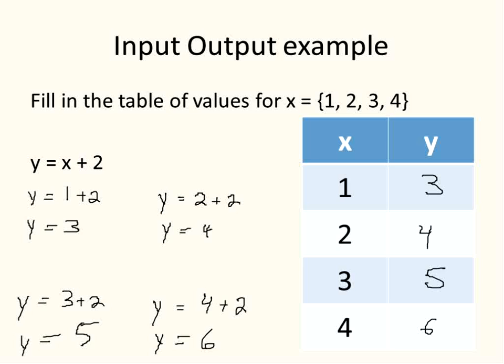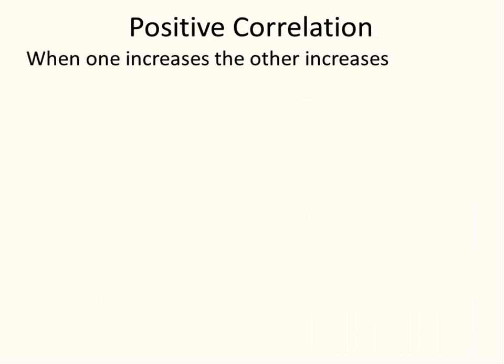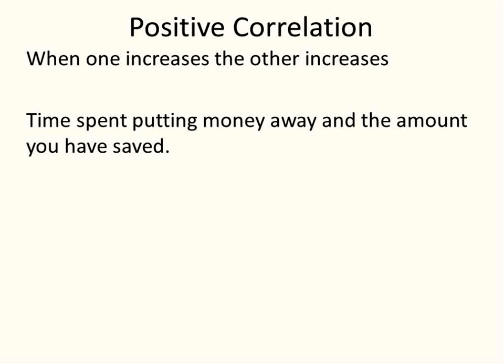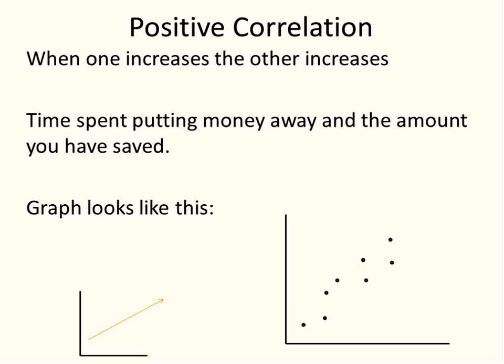Now, there are three ways that the input and output can relate to each other, and we're going to talk about it very briefly. They can have a positive correlation. When one increases, the other increases. Like the time spent putting money away and the amount of money that you have saved. When one increases, the other is forced to increase. Your independent variable is the time that you spend putting away the money, and the dependent, or the one that's forced to change, would be how much you have saved. These are positive correlation. When one increases, the other one is forced to increase. This is what it looks like on a graph. If it's a line graph, you just see it with the trend moving upwards when you move from left to right. If it's a scatter plot, again, the line would be moving generally in an upward pattern.